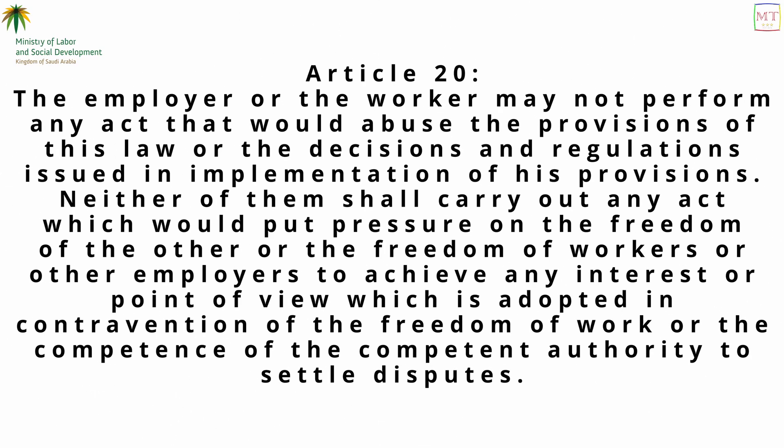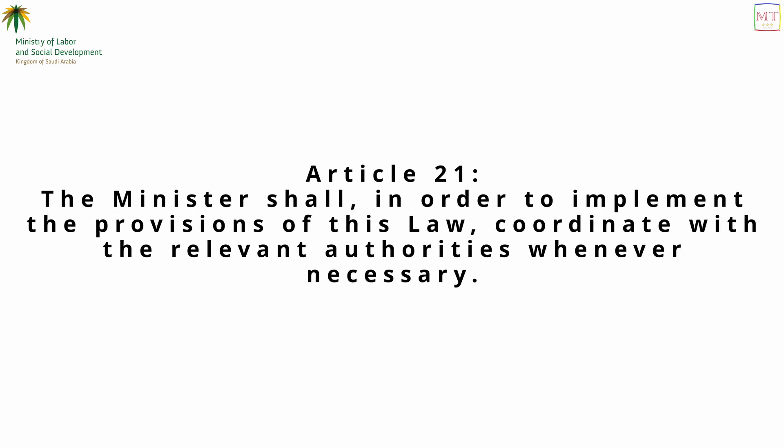Article 20: The employer or the worker may not perform any act that would abuse the provisions of this law or the decisions and regulations issued in implementation thereof. Neither of them shall carry out any act which would put pressure on the freedom of the other, or the freedom of workers or other employers, to achieve any interest or point of view in contravention of the freedom of work or the competence of the competent authority to settle disputes. Article 21: The minister shall, in order to implement the provisions of this law, coordinate with the relevant authorities whenever necessary.